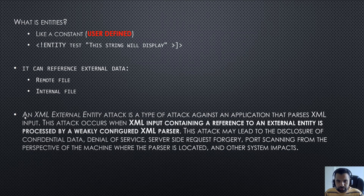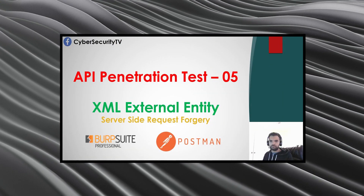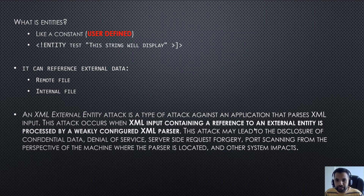Now let's see the definition from OWASP. It says: 'An XML External Entity attack is a type of attack against an application that parses XML input.' We talked in the previous video about what XML input is and how user-controlled input can lead to XPath injection. This attack occurs when XML input containing a reference to an external entity — like a remote file — is processed by a weakly configured XML parser. This attack may lead to disclosure of confidential data: if I can refer to any internal file and the response returns the file content, that's a data disclosure.